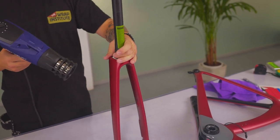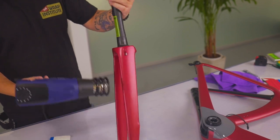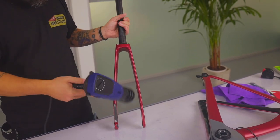The final step is to go over the entire fork with a heat gun just to make sure all the edges are sealed and that the overlaps are secure. Be extra thorough during this process.